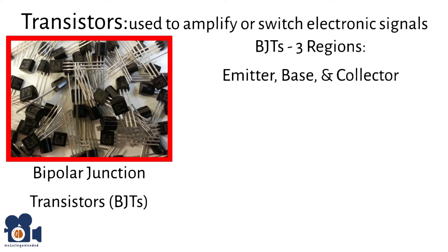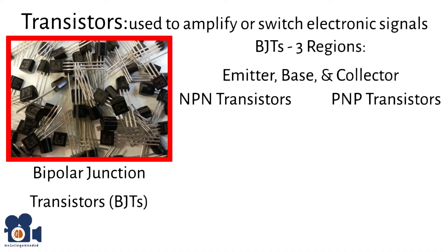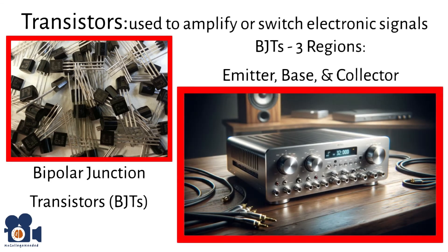There are two main types of BJTs. NPN transistors, where current flows from the collector to the emitter when a positive voltage is applied to the base, and PNP transistors, where current flows from the emitter to the collector when a negative voltage is applied to the base. BJTs are commonly used in audio amplifiers to amplify weak audio signals to drive speakers, and in microcontrollers to switch on and off various functions like LEDs.